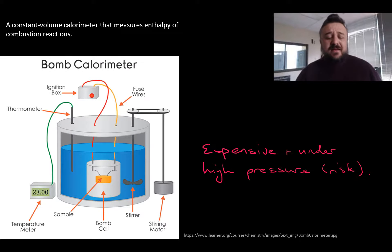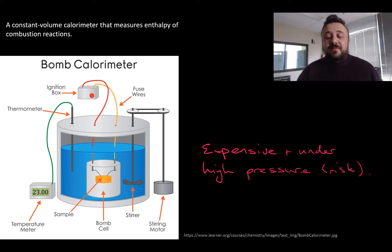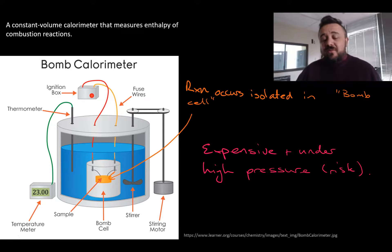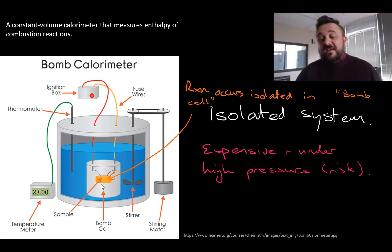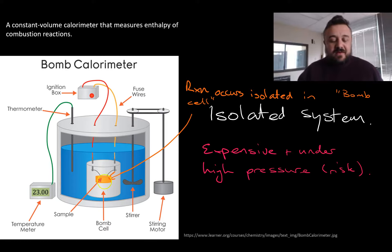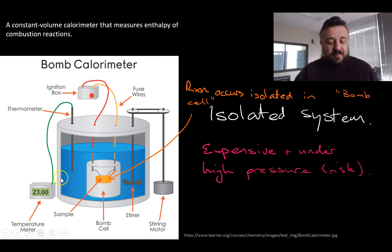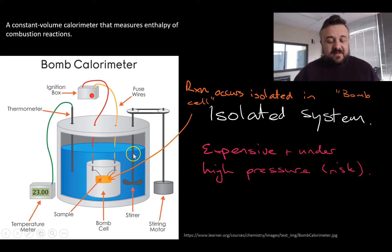So let's look at the bomb calorimeter — the big daddy of them all. The bomb calorimeter is a constant volume and constant pressure calorimeter that measures the enthalpy of combustion reactions or other reactions. The reaction occurs isolated inside the bomb cell. It's an isolated system, which means heat and energy don't leave. There's an automatic stirrer. It's expensive and under high pressure. We've got digital thermometers, which makes it more accurate. The reaction is isolated and we're actually measuring the temperature change of the water surrounding it.